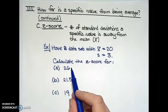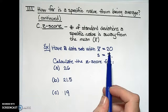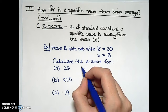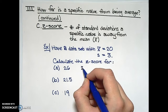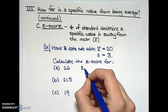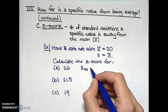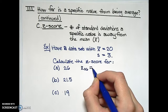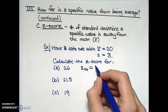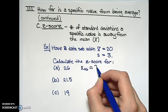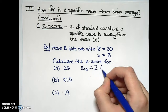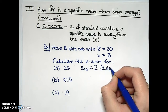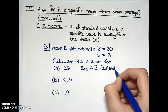Remember, the z-score measures the number of standard deviations a specific value is away from the mean. So 26 is a total of six units away from the mean. We anticipate that z₂₆ is 2, because this is two standard deviations away from the mean.